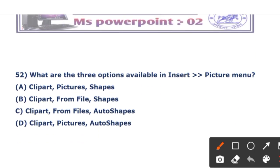The next question: what are the three options available in the Insert Picture menu? The options are: Clip Art, Picture, Shapes; Clip Art From File, Shapes; Clip Art From File, Auto Shapes; and Clip Art, Picture, Auto Shapes. The right answer is option C — Clip Art, From File, and Auto Shapes.